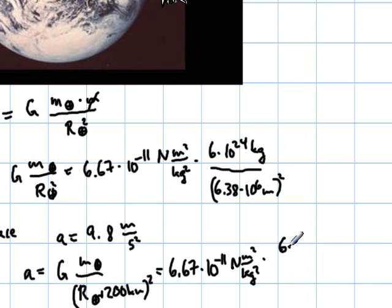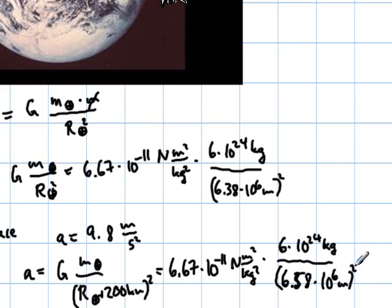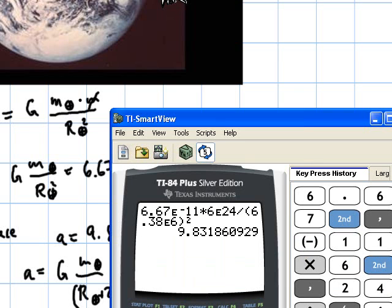So, times 6 times 10 to the 24 kilograms, divided by 6.38. No, in this case, 6.58 times 10 to the 6 meters. And that will be squared. And I'm going to go through the motions here, calculating it. But, and then I will show that there's actually a quicker way. So, let me do this first, and I'm going to show the quicker way. So, go to the calculator.